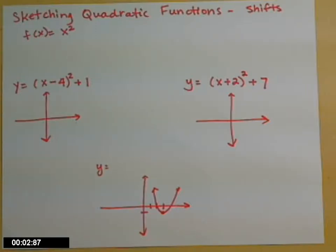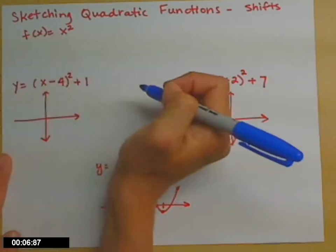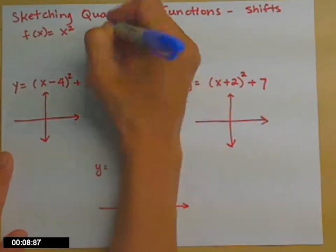Let's continue to explore how we use shifts to get a sketch of quadratic functions. We'll start with our general f of x equals x squared.